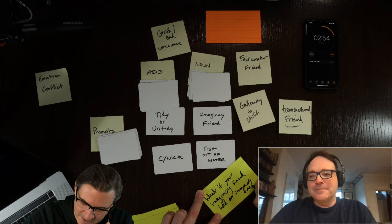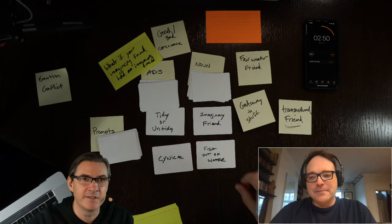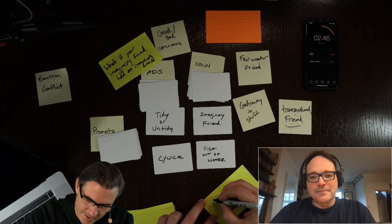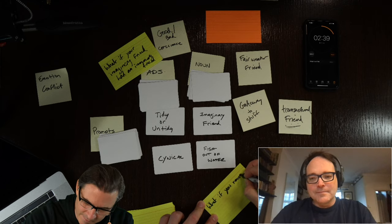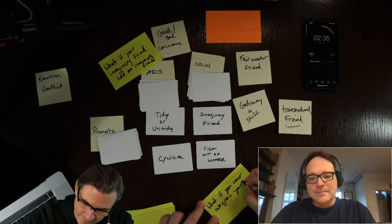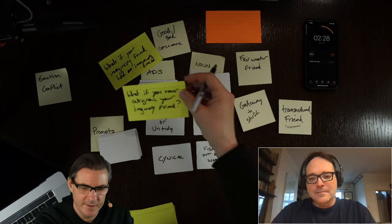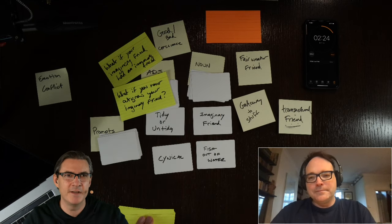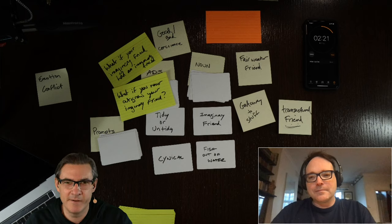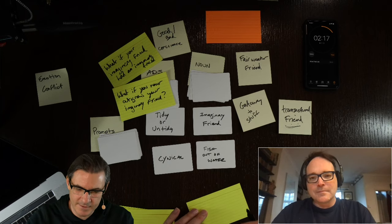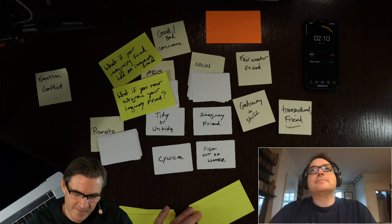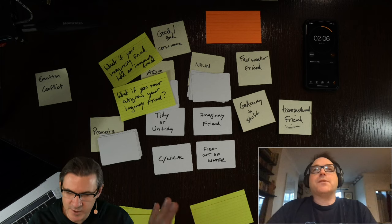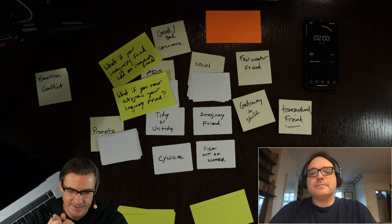My handwriting is terrible but I'm writing this down to type up later. I was thinking: what if you never outgrow your imaginary friend? That's another possibility. But I also like the idea that the imaginary friend isn't literally a made-up thing — rather, it's a friend who you think is a friend but there's an illusion to it. I'm interested in exploring that. I've got two minutes left — what is the cynical or fish-out-of-water aspect of that?